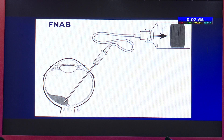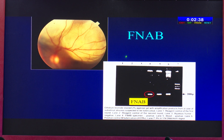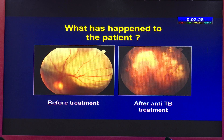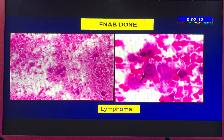Fine needle aspiration biopsy requires dexterity. A 14-year-old girl with sudden dimness of vision in one eye for one week had a subretinal abscess. The material was too small for cytologic diagnosis but PCR showed Mycobacterium tuberculosis DNA, establishing the diagnosis. After treatment there was complete resolution of inflammation with improvement of vision. A 57-year-old lady with painless gradual dimness of vision for nine months was treated for tubercular choroiditis for six months. Fine needle aspiration biopsy showed a necrotic background with large lymphoma cells — confirming a diagnosis of lymphoma.